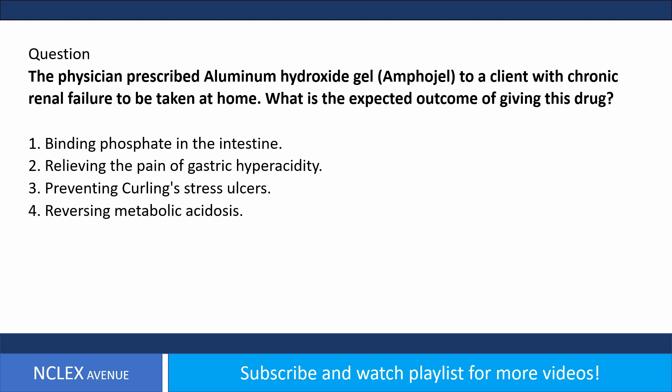The physician prescribed aluminum hydroxide gel (Amphojel) to a client with chronic renal failure, to be taken at home. What is the expected outcome of giving this drug? One, binding phosphate in the intestine; two, relieving the pain of gastric hyperacidity; three, preventing Curling's stress ulcers; four, reversing metabolic acidosis.